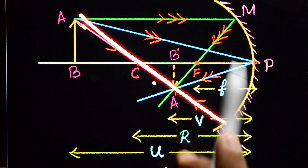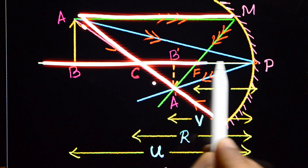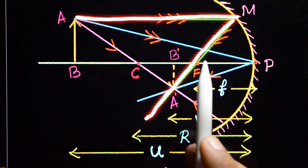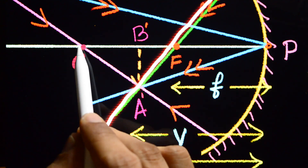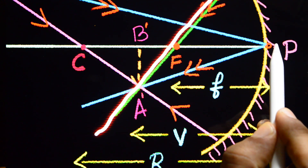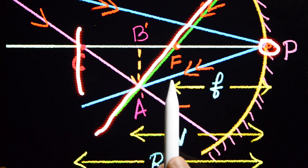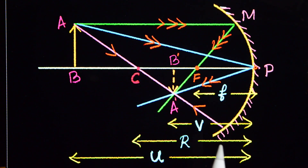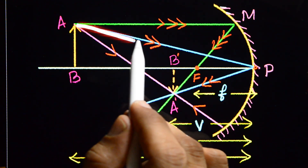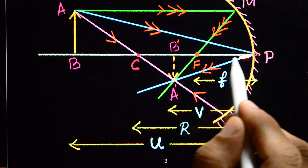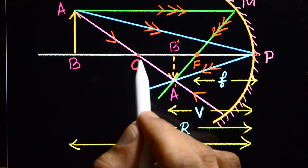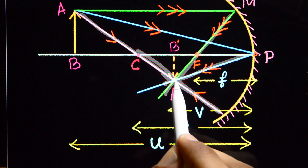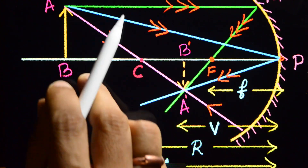Second ray: draw the ray which is parallel to the principal axis. This is the principal axis, and this is the parallel ray. Draw the second ray — it reflects. Focus is a point that is exactly between the pole and the center of curvature. The ray which is incident at the pole obliquely reflects like this. These reflected rays are meeting at a particular point.